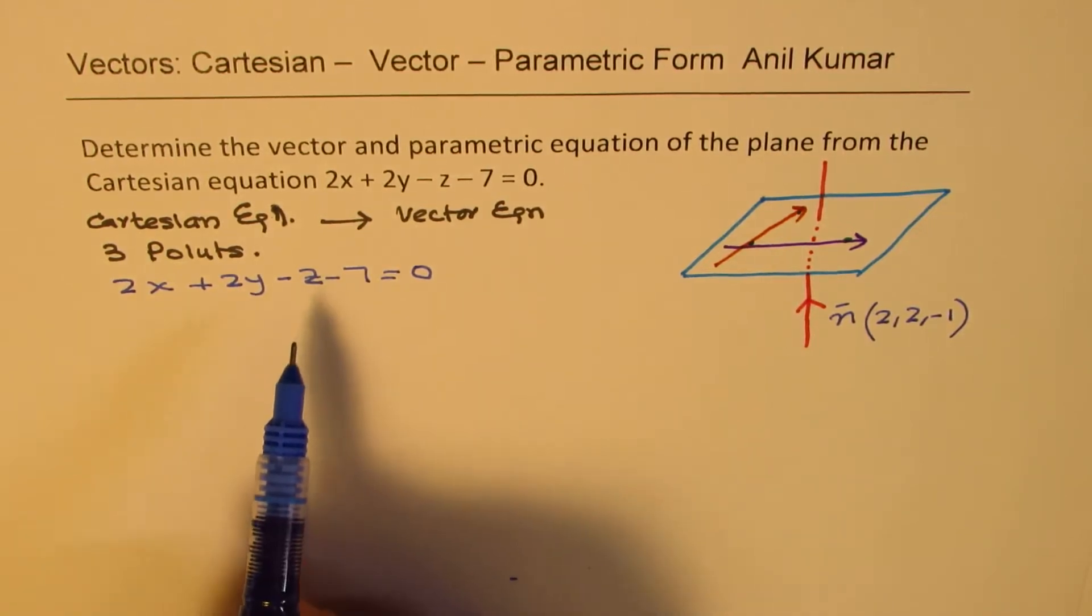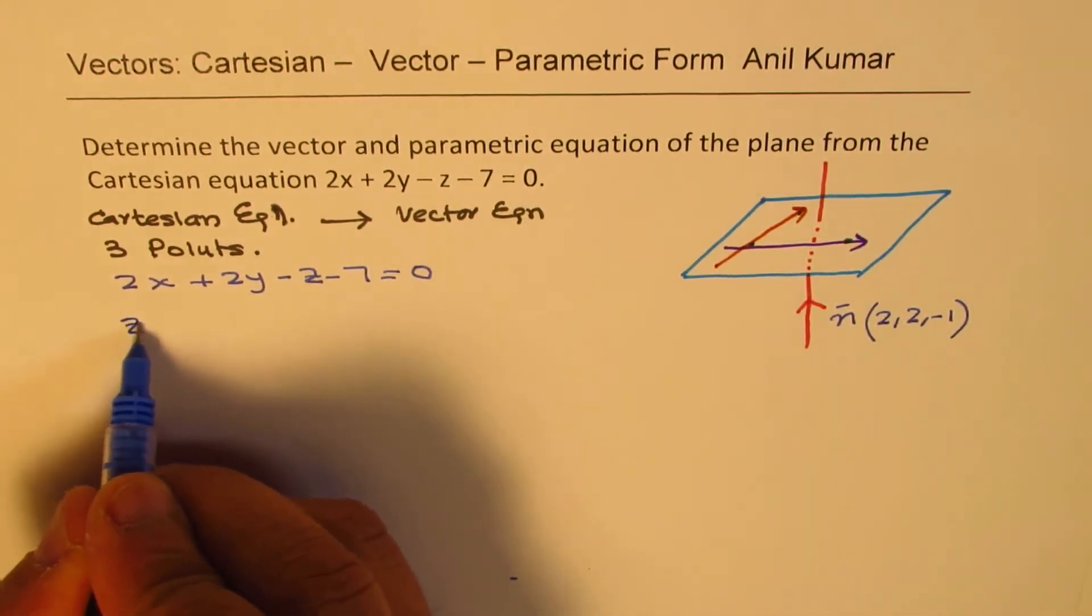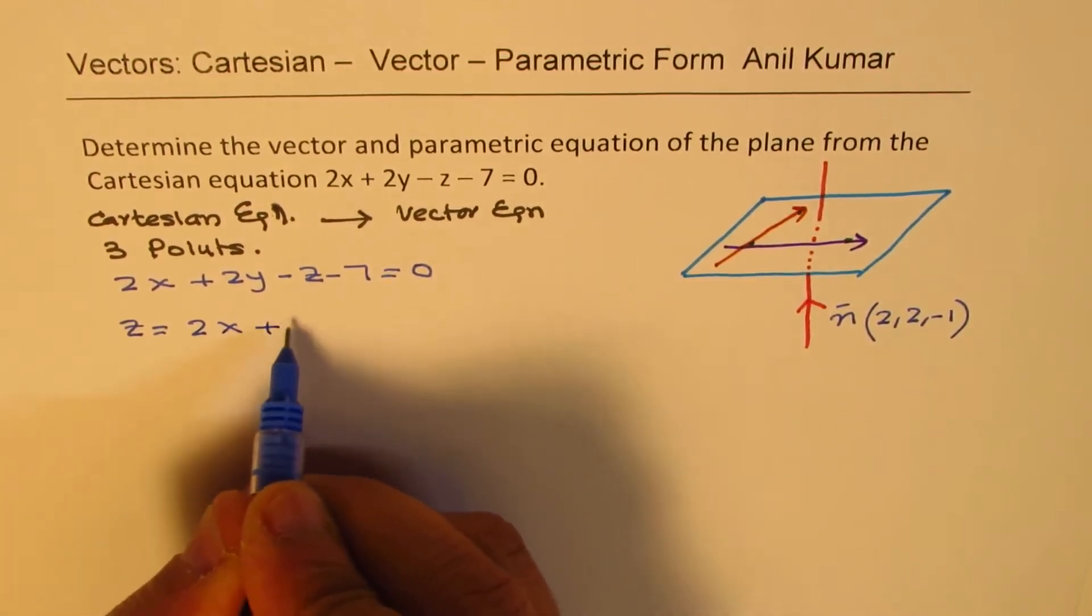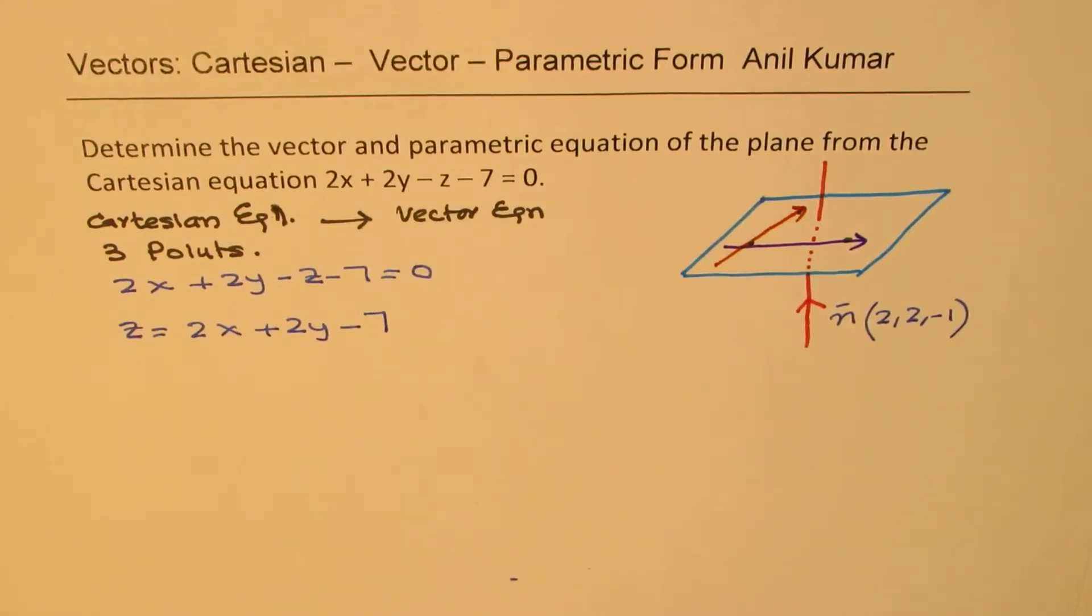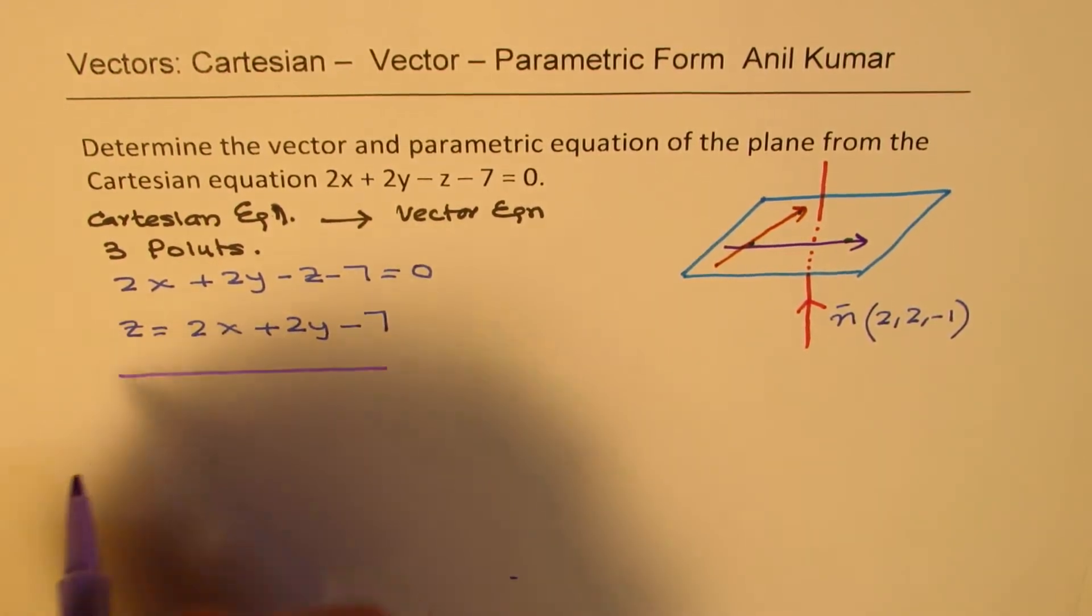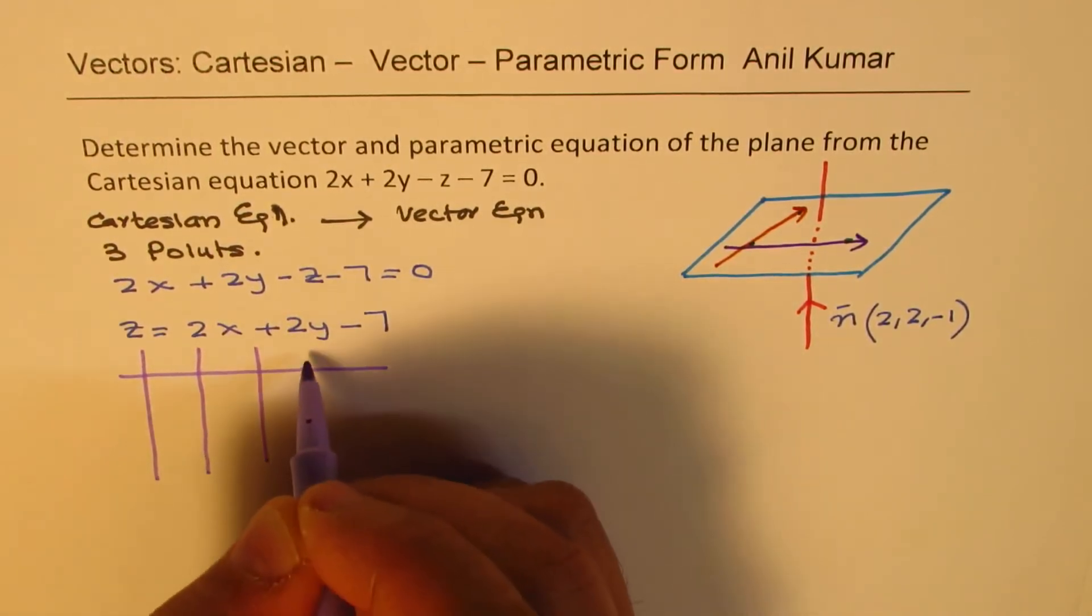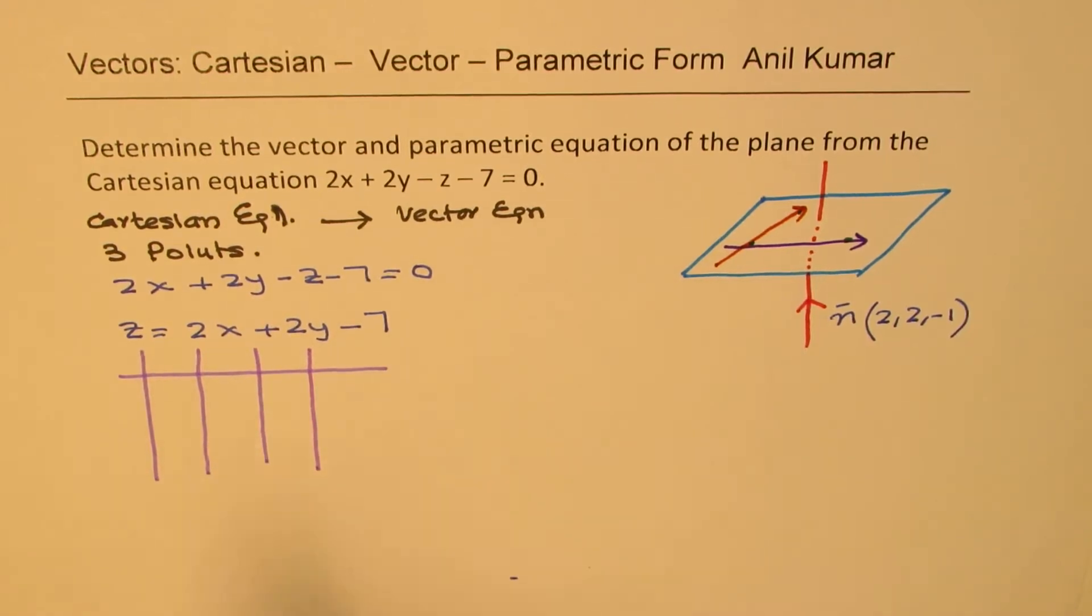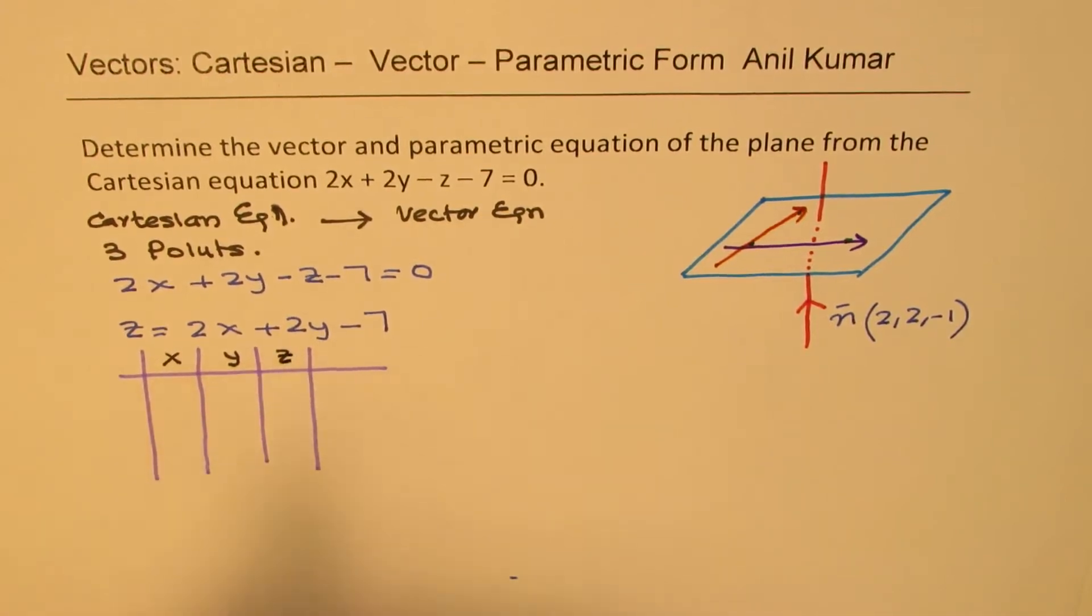We should make our work simpler by isolating the simplest of these parameters. So, z, if I take it on the other side, I can write z as equal to 2x plus 2y minus 7. Now, for different values of x, we can find the value of z. So, we'll just make a table here and find three points, giving values to x and y. We'll calculate what z is.